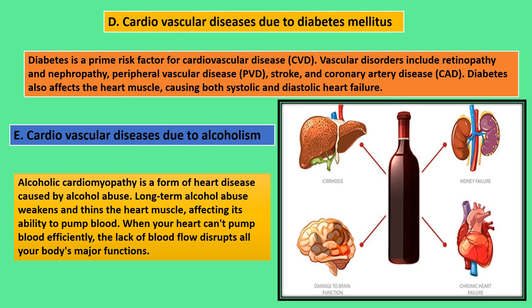The last cause is cardiovascular diseases due to alcoholism. Alcoholic cardiomyopathy is a form of heart disease caused by alcohol abuse. Long-term alcohol abuse weakens and thins the heart muscle, affecting its ability to pump blood. When your heart can't pump blood efficiently, the lack of blood flow disrupts all your body's major functions. Alcohol is also very harmful to the brain, excretory system (kidneys), heart, pulmonary system, and liver.